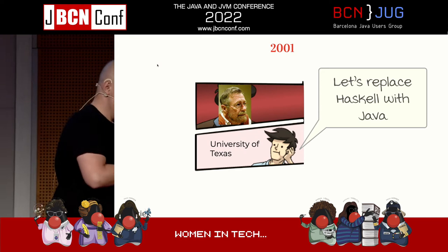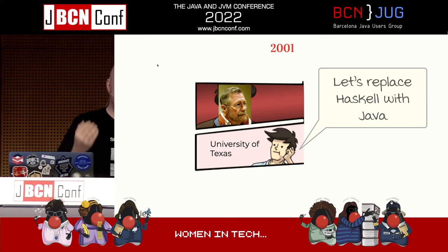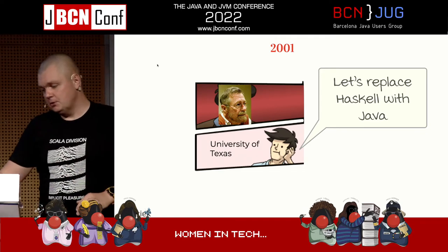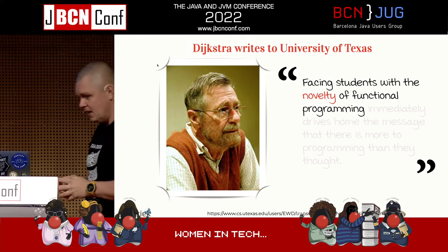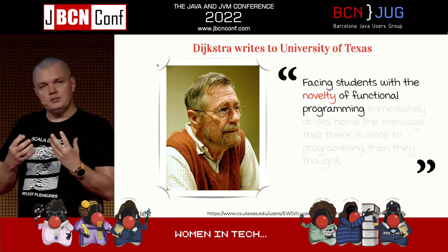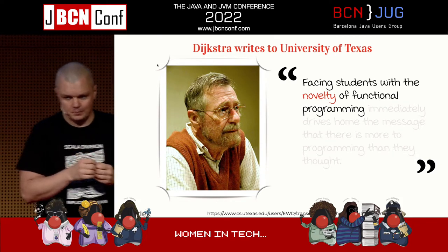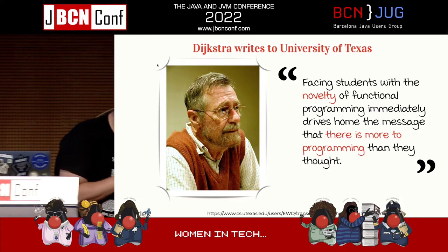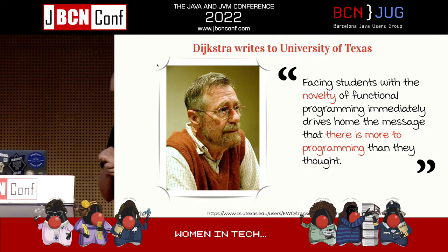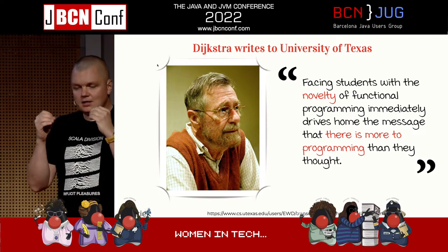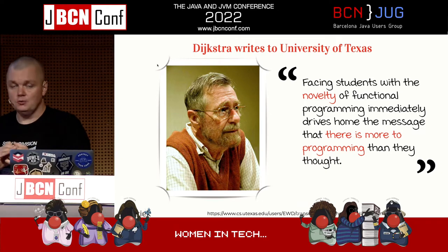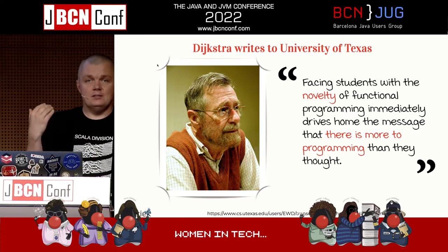The University of Texas wanted to switch from Haskell to Java as an introductory programming language. One of the UT professors, the very famous computer scientist Edgar Dijkstra, heard this rumor. He was retired back then, and he wrote a letter because he opposed this decision — a very short but important letter that still flows around the web to this day. In this letter, he noted that facing students with the novelty of functional programming drives home the message that there is more to programming than they thought.